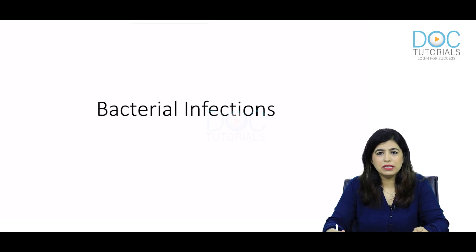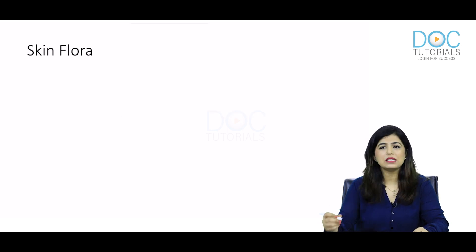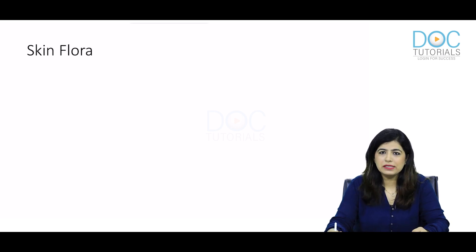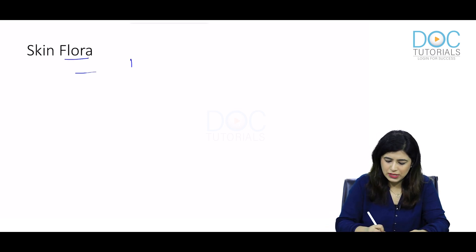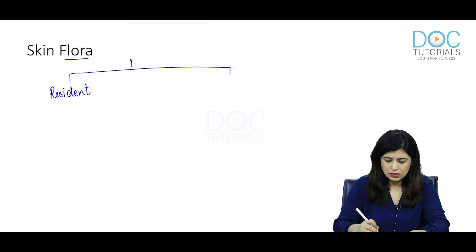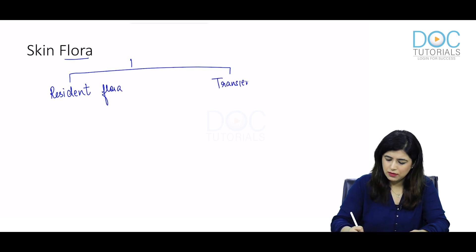Welcome to this lecture on bacterial infections in the skin. Before we discuss the infections, let us have a look at what bacteria live on the skin. The bacteria that live on the skin are called the skin flora. The flora is of two types: the resident flora or the transient flora.